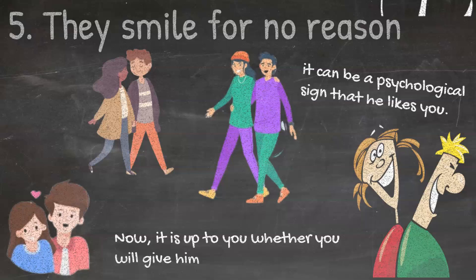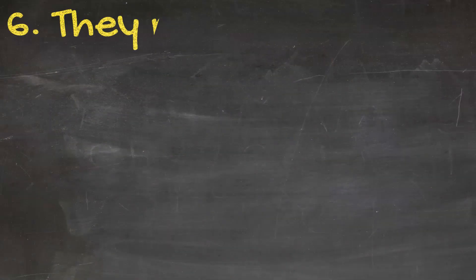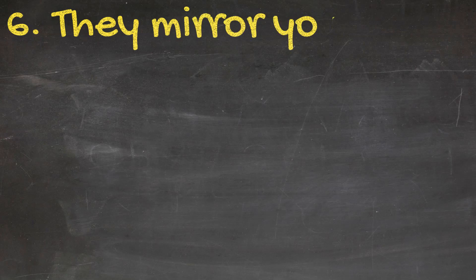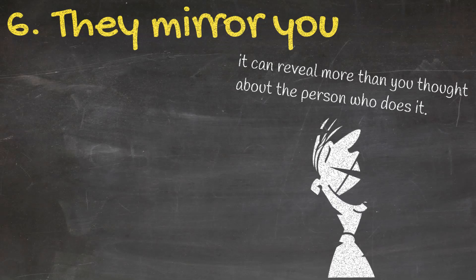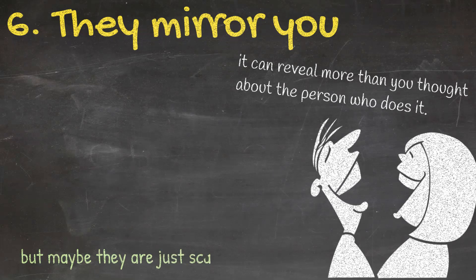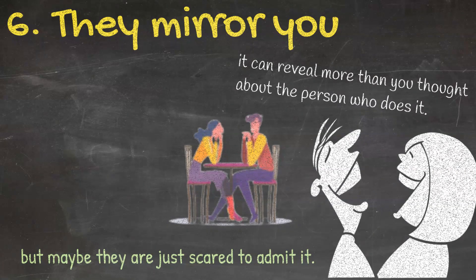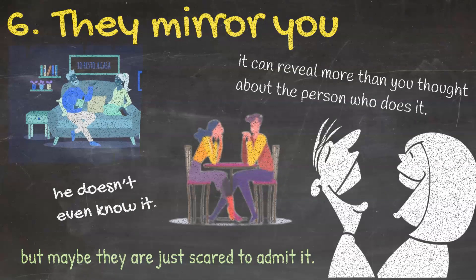Six: They mirror you. Even if this doesn't look like a psychological sign that someone likes you, it can reveal more than you thought about the person who does it. If you see that someone actually mirrors your movements, it is a sign that they like you, but maybe they are just scared to admit it. If you just met a man and he imitates every move you make, it is his subconscious that is playing with him and he doesn't even know it. But you know it, and you can enjoy the fact that the handsome man sitting next to you wants you really bad.